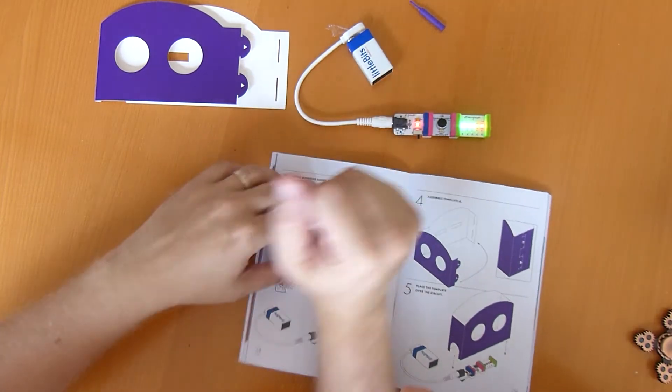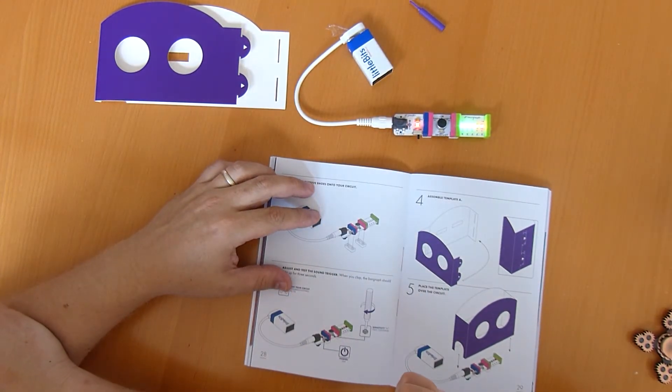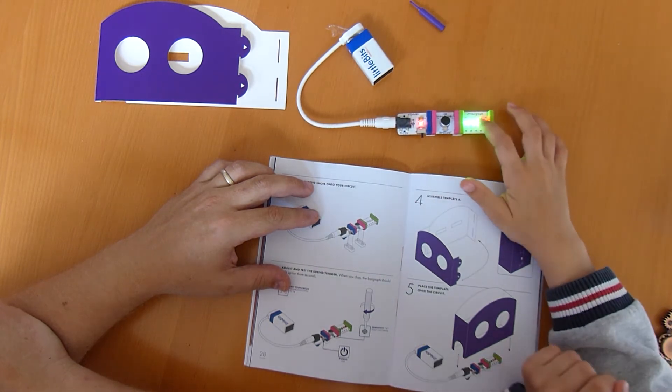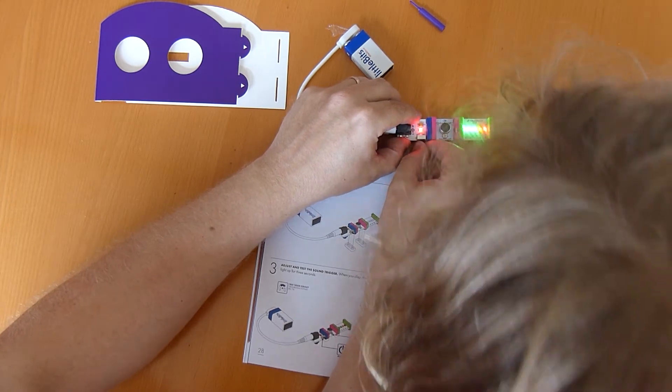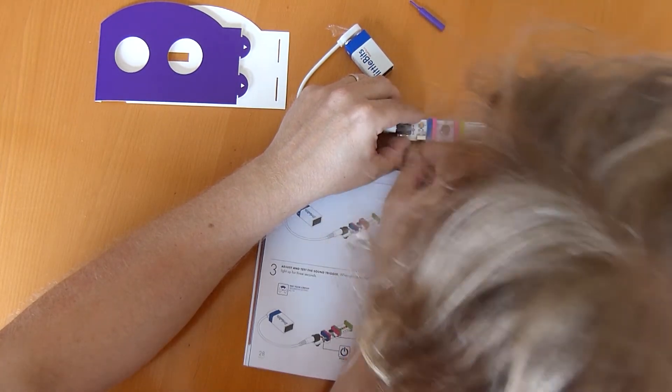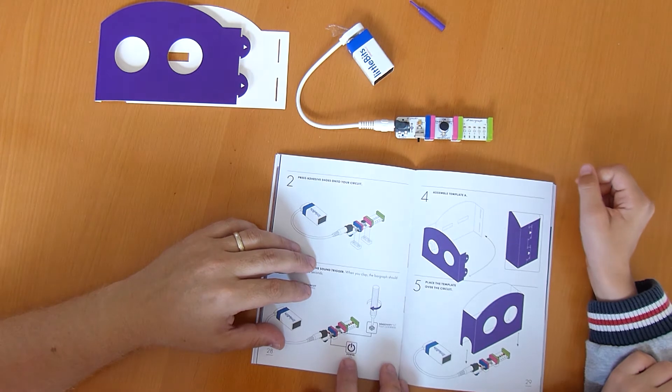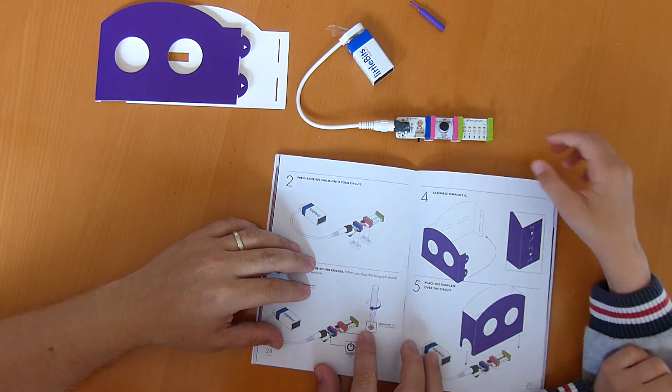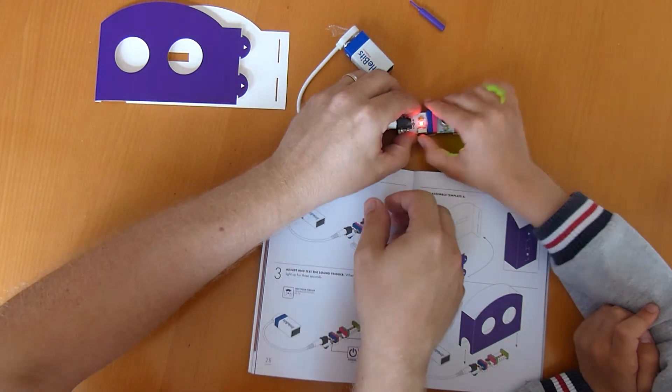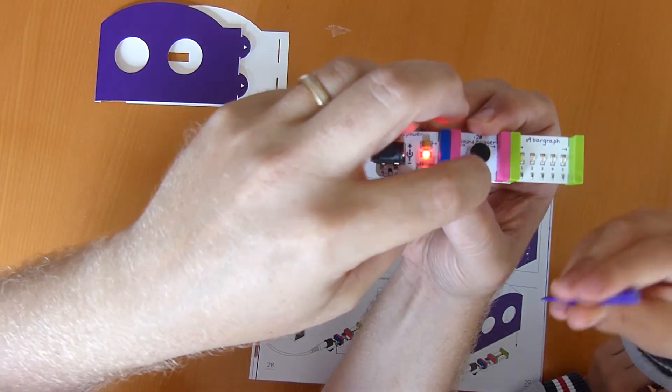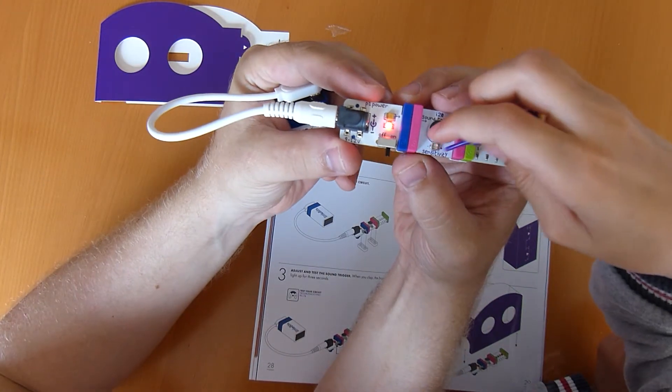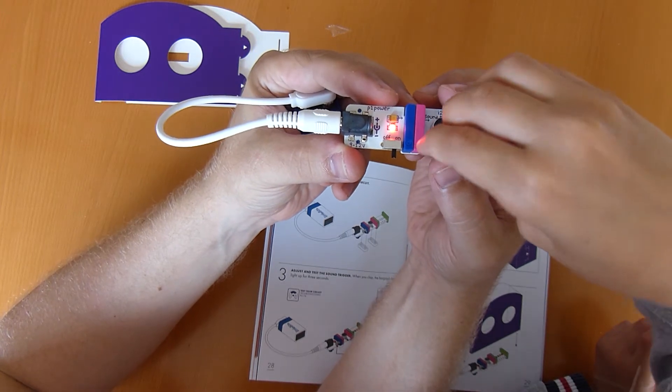Plug that into there. What happened? LED started flashing. Yeah it turned on didn't it. So we've got an on and off switch here that we can turn it all on and off. So the next step says turn the power on and then use the screwdriver to adjust this tiny screw to adjust the sensitivity. Let's make some noise.